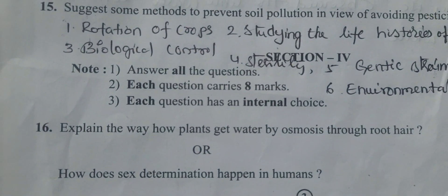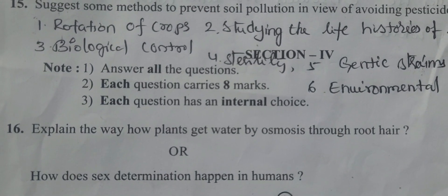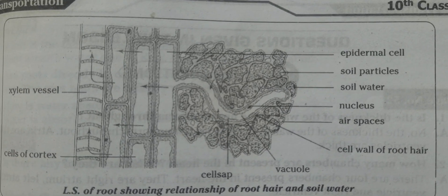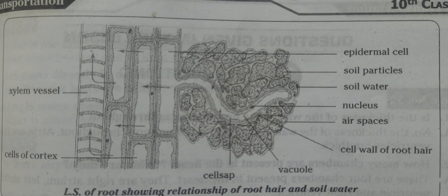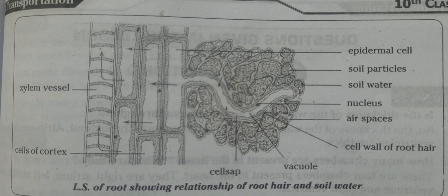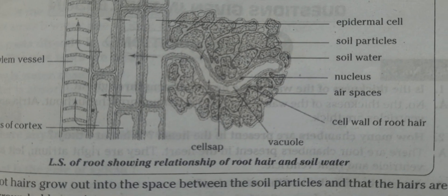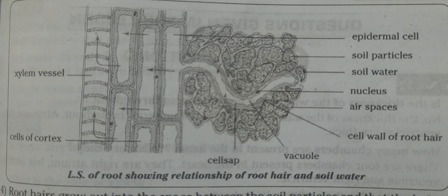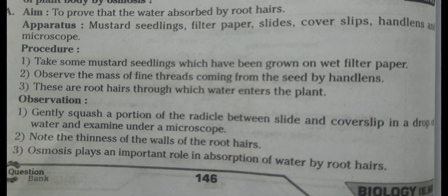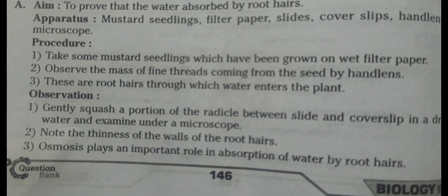Section 4, sixteenth question: explain how plants get water by osmosis through root hair. A diagram showing the LS of root with xylem, air spaces, epidermal cells, soil particles, and soil water is provided. The aim is to prove that water is absorbed by root hair through osmosis.